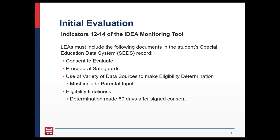In the document tab of the student's file in SEDS, we will be reviewing the AED form (Analysis of Existing Data), the evaluation summary, the student's eligibility determination, and any meeting notes in the student's file to determine what data sources were used for the eligibility determination. Lastly, we will be reviewing eligibility timeliness to ensure determinations were made timely — within 60 days after consent.